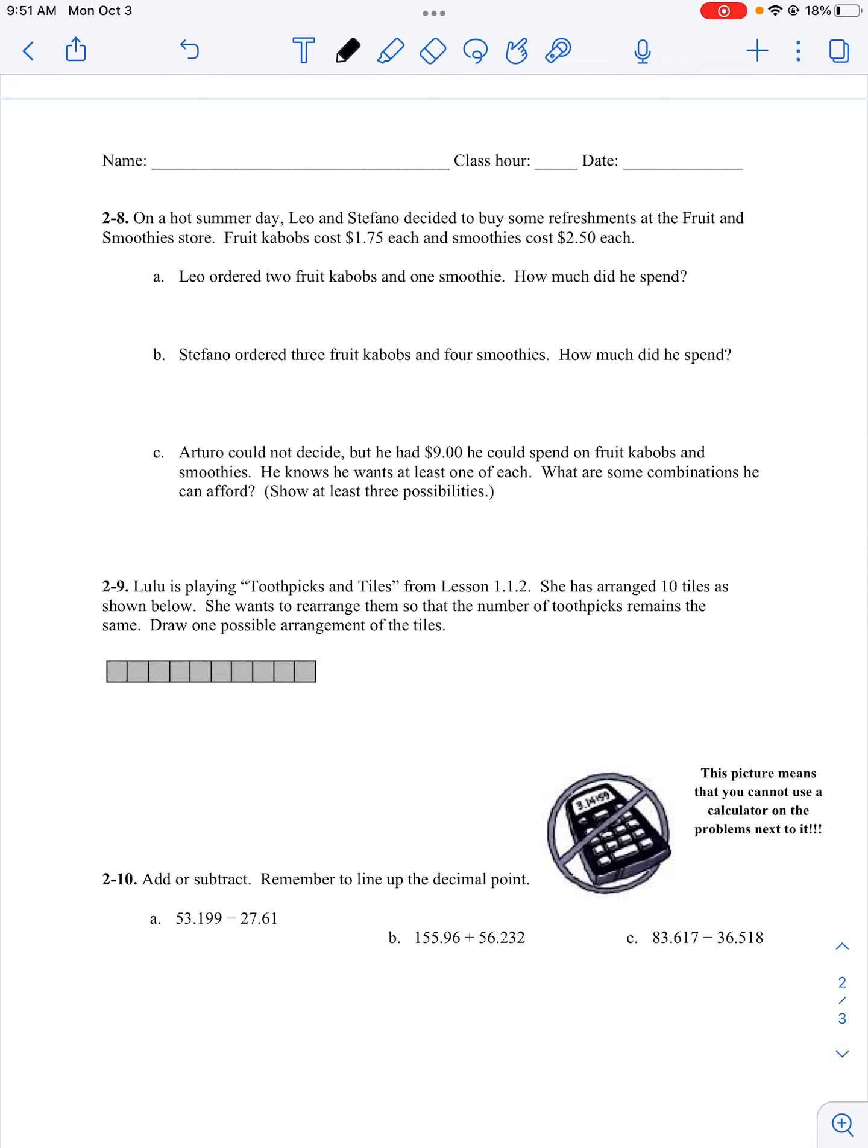Okay, moving down. Problem 2.8. On a hot summer day, Leo and Stefano decided to buy some refreshments at the fruit and smoothies store. Fruit kebabs cost $1.75 and smoothies cost $2.50 each. So Leo ordered two fruit kebabs, so I'm going to write down how much each one costs, and one smoothie. We want to know how much he spent, so we have to add them together. So starting in my ones column, five plus five is 10, carry my one. Seven plus seven is 14, plus one is 15. 15 plus five is 20. Two, three, four, five, six. He spent $6.